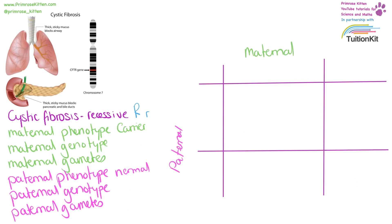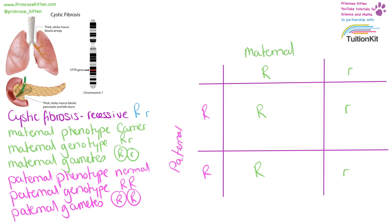We can change that so only one of them is a carrier. A carrier has a normal gene and a recessive disease gene; the normal phenotype genotype is uppercase R, uppercase R. Moving the gametes over: the carrier has normal gene and disease gene, and the normal parent has normal gene and normal gene. Filling in the Punnett square, these two babies are both normal and these two babies are both carriers — but there are no diseased babies here.